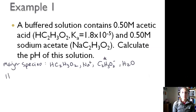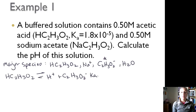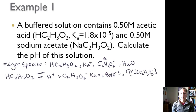We can write our equilibrium equation breaking up into H⁺ and C₂H₃O₂⁻. We can also write a Ka value for this, which is 1.8 × 10⁻⁵. And if we want to write the expression, it's H⁺ times C₂H₃O₂⁻ divided by HC₂H₃O₂.